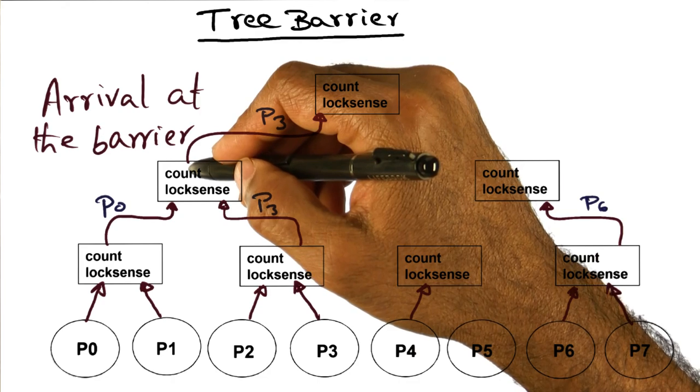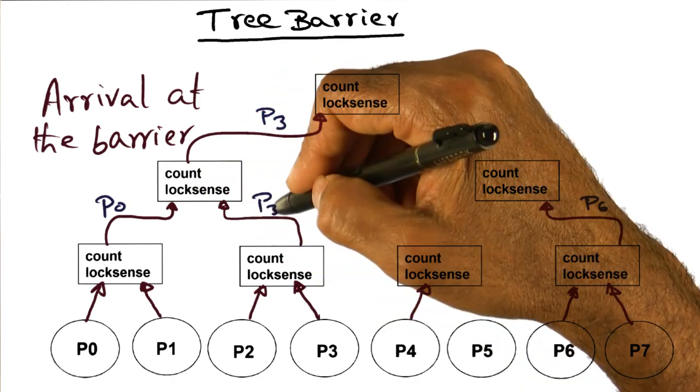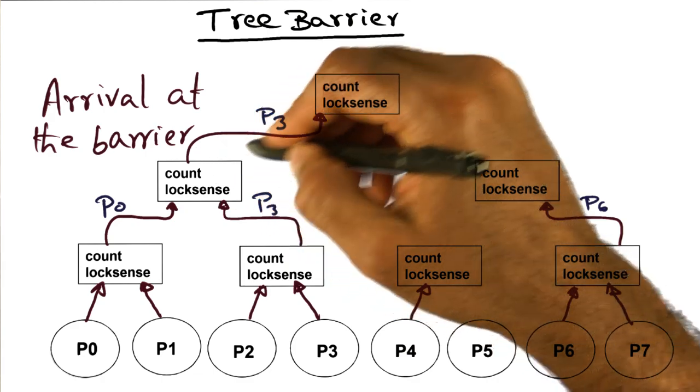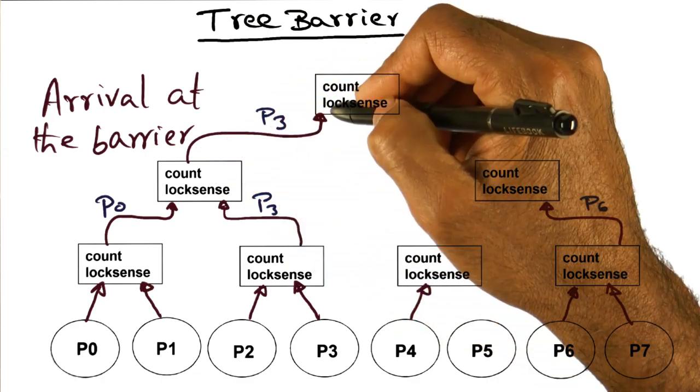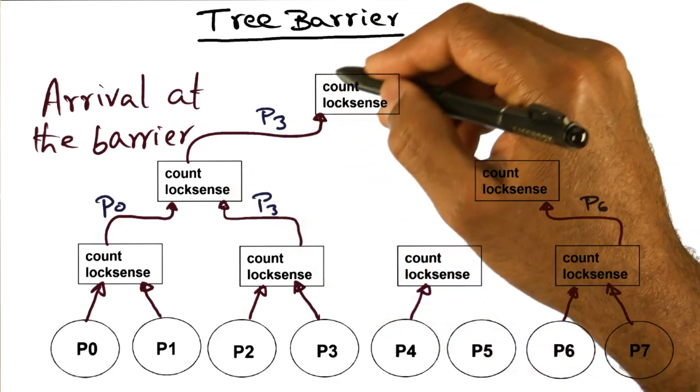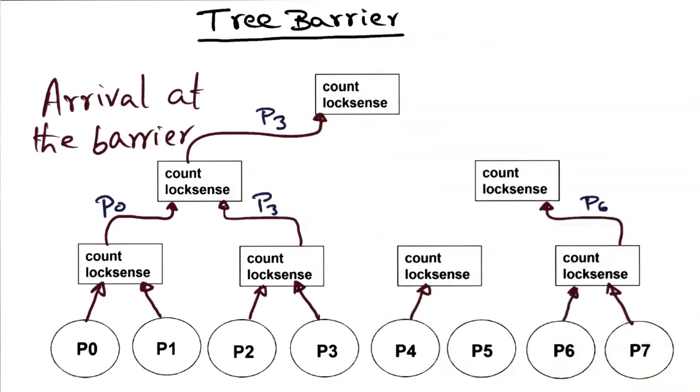And remember P0 decremented the count, and it was waiting on lock sense. So P3 when it comes here finds that the count is one, decrements it, becomes zero, and it moves up the tree because the barrier is still not done until we know that everybody has arrived at the barrier.